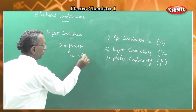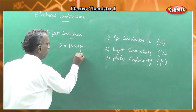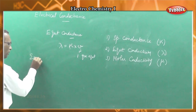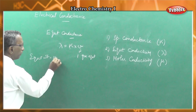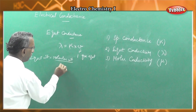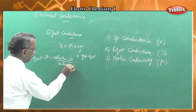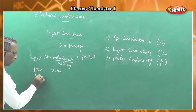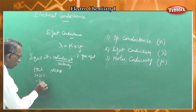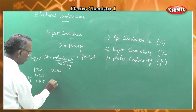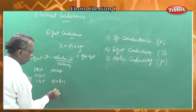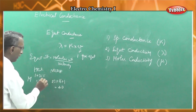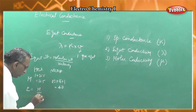Lambda equals kappa into V, where kappa is the specific conductance and V is the volume in cc. Equivalent weight is equal to molecular weight divided by valency for compounds, and atomic weight divided by valency for elements. For HCl: molecular weight is 36.5, valency is 1 (since 1 electron is transferred from hydrogen to chlorine), so equivalent weight equals 36.5.